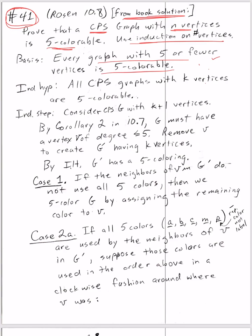My inductive hypothesis is also straightforward: all connected planar simple graphs with k vertices are five-colorable. Now for the inductive step, we want to consider a connected planar simple graph with k plus one vertices, and we'll use our inductive hypothesis to show that it's five-colorable.